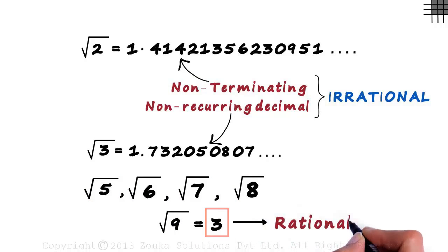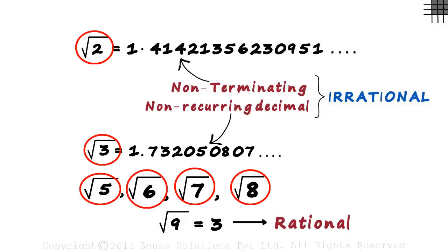This is a rational number. Yes, root 9 is not an irrational number. In fact, square root of any perfect square will be a rational number. But the square root of any number which is not a perfect square will always result in an irrational number.